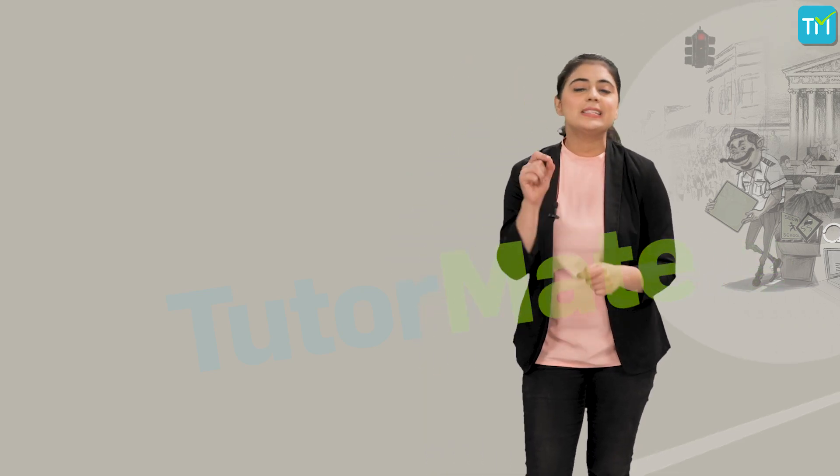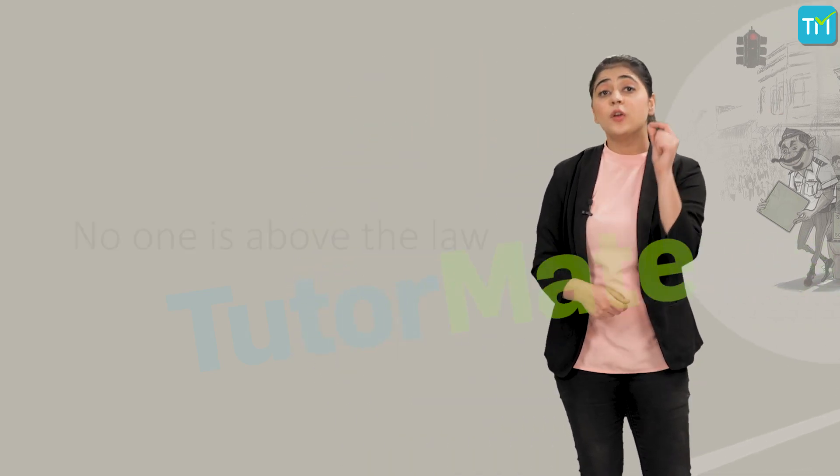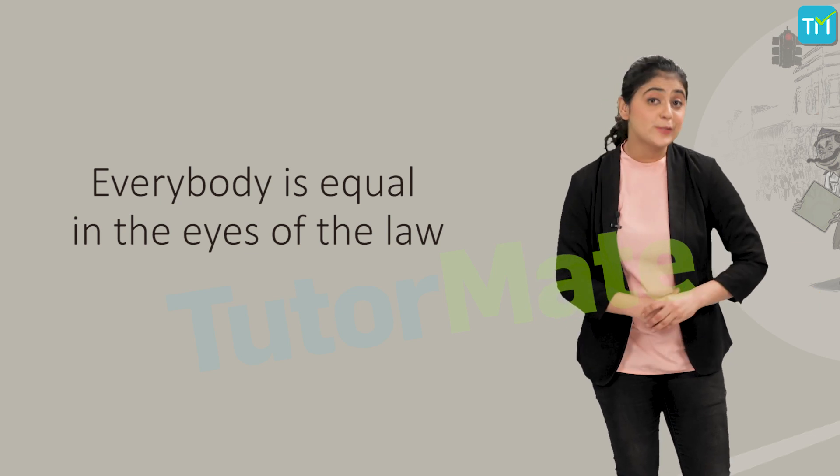Let me begin by giving you a situation. Imagine a scenario where a young individual has been given a 10 year jail sentence by a district court for a crime that he has committed. His father was a prominent government official, so he could help him go into hiding and the convicted was able to get away from the sentence. Do you think the government official did the right thing? No, he didn't. Just because he was a politically powerful man, should his son be treated any differently? This is a clear case where the law got violated, because as per the Indian judiciary system, no one is above the law and everybody is equal in the eyes of the law.